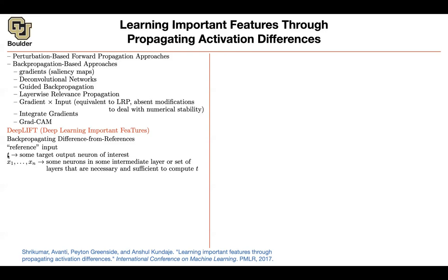You look at the neurons of interest, which could be the input pixels. You take an image — which could be a black image — push it through your neural network, and that gives you your reference. The corresponding prediction is going to be your reference prediction. So you'll have x₁⁰ up until xₙ⁰, your input pixels all having zero value. You push them through your neural network, and that gives your reference prediction. And then what you backpropagate are these delta t's — differences from reference.